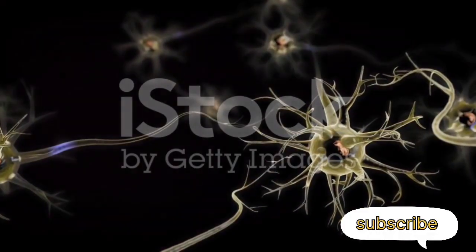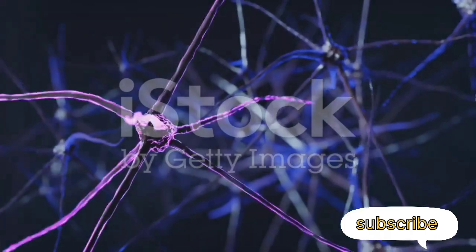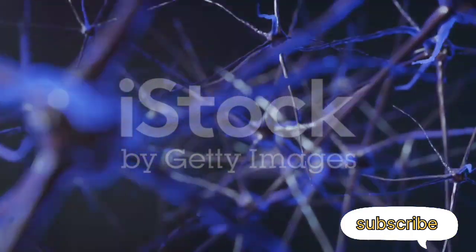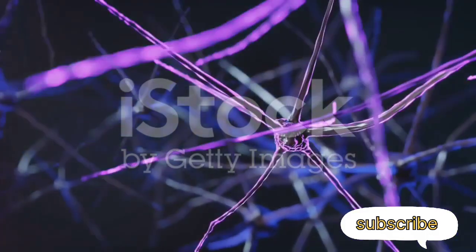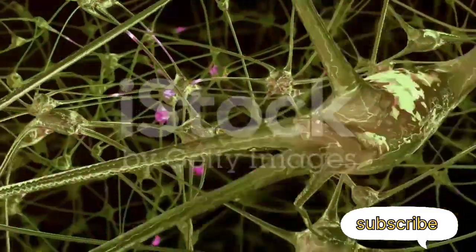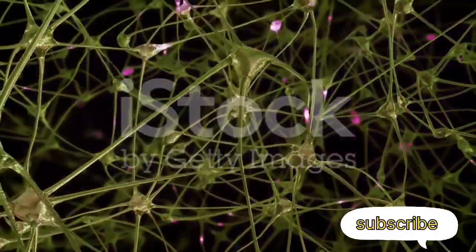Now what about ganglia? If nerves are the highways, ganglia are the bus stops or junctions. They're clusters of nerve cell bodies located outside the central nervous system. When a nerve impulse reaches a ganglion, it's like a bus reaching a stop. The impulse can either continue along the same route, or it can be passed on to another nerve, just like a passenger changing buses at a junction.